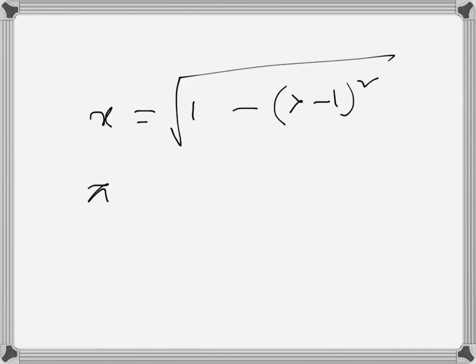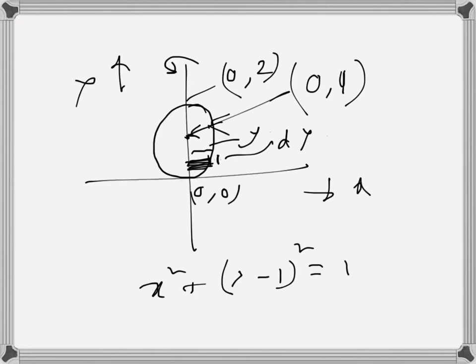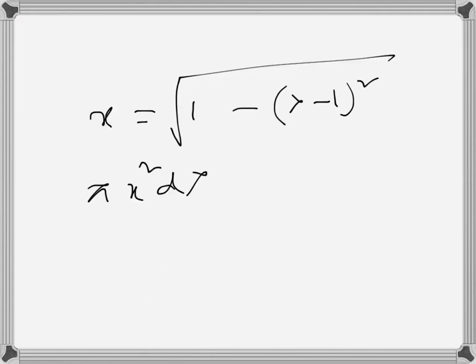So π·x²·dy is the volume of one disk, because π·r² is the surface area of the disk, and then multiplied by dy is the volume.